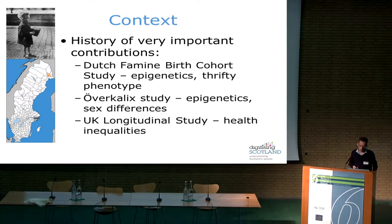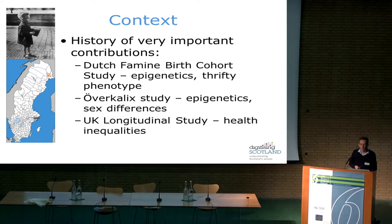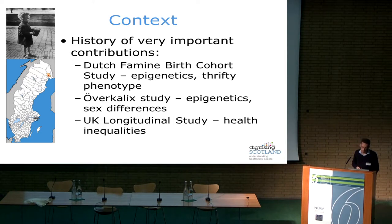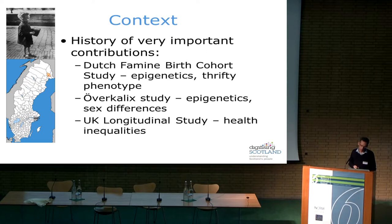This led us to understand both the impact on that generation and, importantly from an epigenetic perspective, that the effect was passed on across generations. It wasn't just the children born to mothers exposed to food shortage — those children's children also showed an impact. A very similar study in terms of epigenetics is the Överkalix study in Sweden, which used a similar design looking at food shortages as estimated from crop outputs, identifying shortage and abundant years.